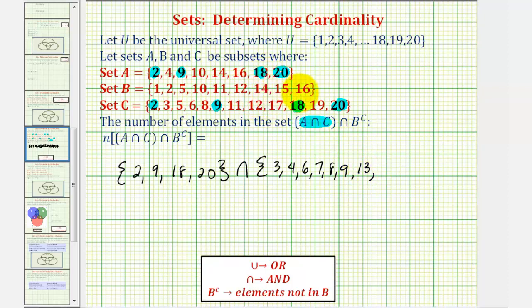And then we have fourteen, fifteen, sixteen, so notice that seventeen through twenty are also not in B. So we have seventeen, eighteen, nineteen, and twenty.